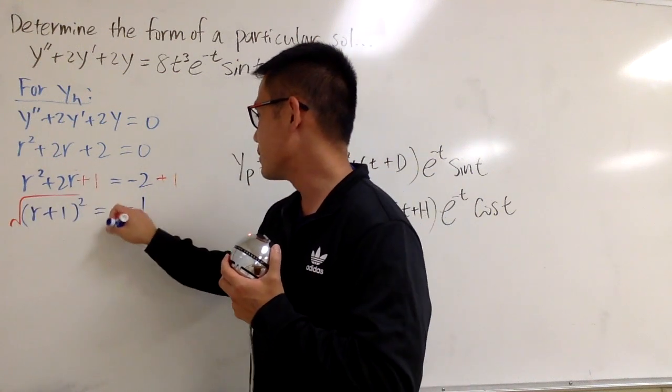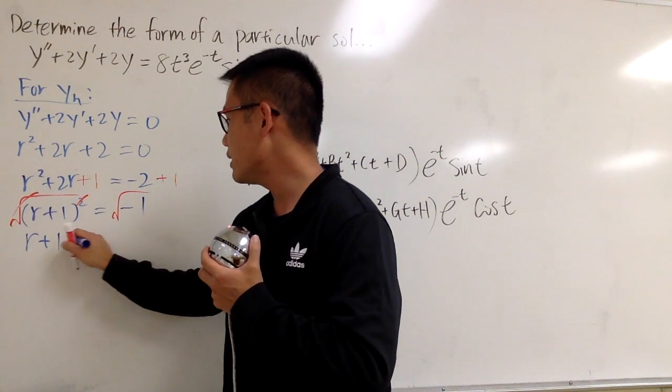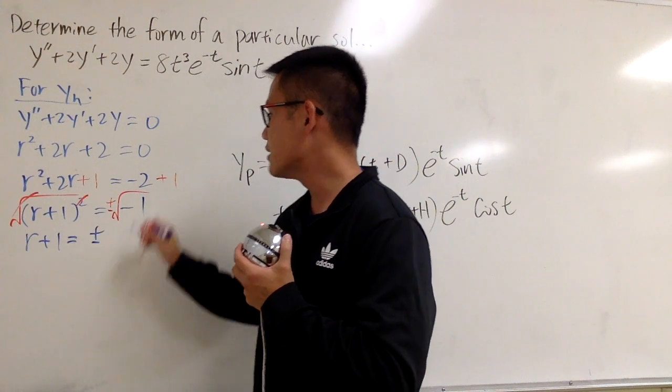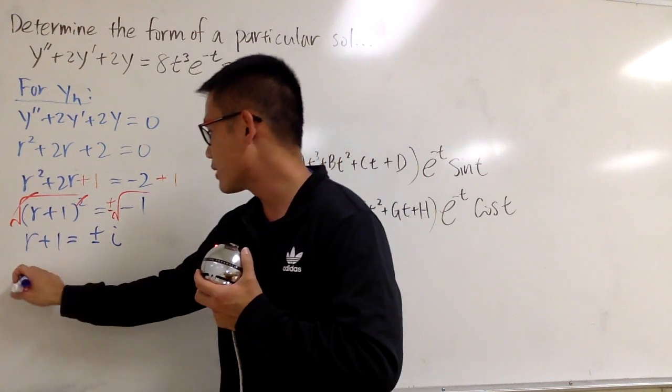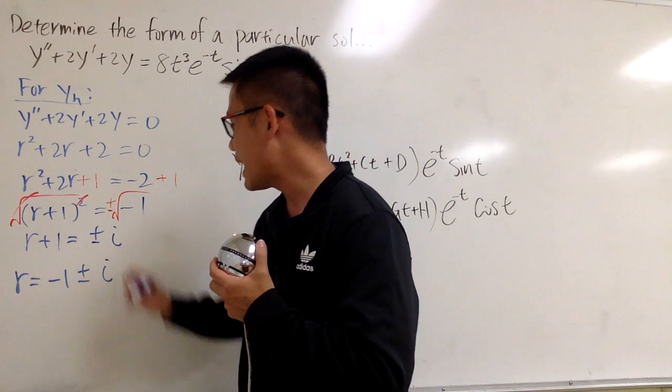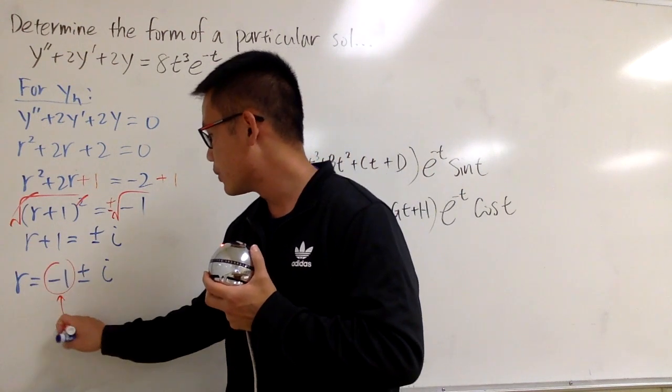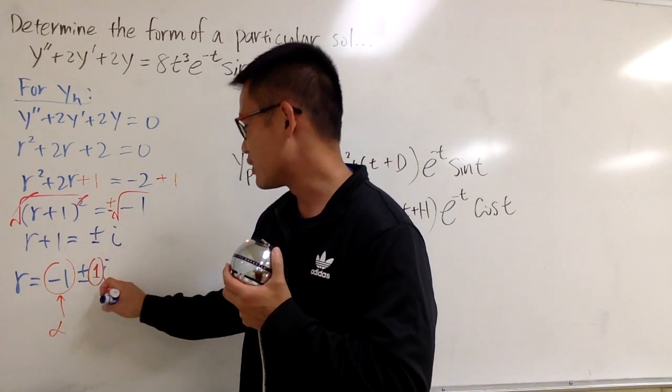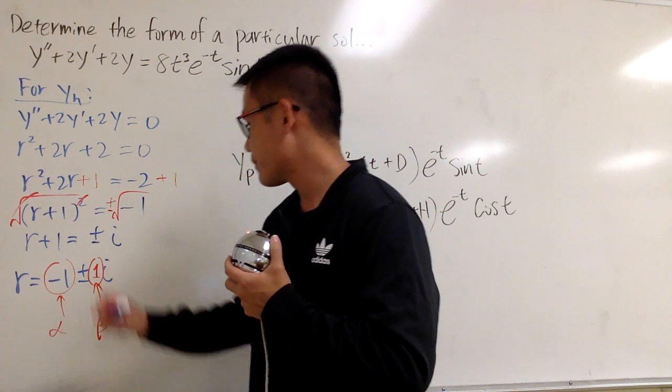And then what I can do is, of course, the usual business, square root of both sides, cancel this out. r plus 1 equals to, oh, by the way, don't forget the plus minus, plus minus square root of negative 1, which is just an i. And now move the 1 to the other side. So we are talking about r is equal to negative 1 plus minus i. So here we have the alpha, which is negative 1, and the beta is 1i. So it's the 1, because we have the 1i right here, so beta is 1.